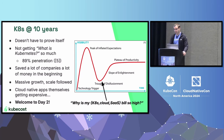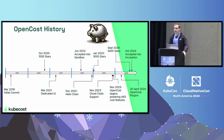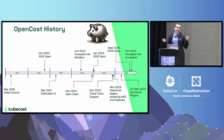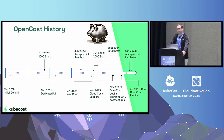So enter OpenCost. It's not necessarily a new project — our initial commit was in early 2019. I've broken this up into a timeline of social or milestone events on top, and more technical stuff on the bottom. We introduced a helm chart, cloud costs, and more recently OpenCost has now powered some of the cost functionality of AKS plugins, which we'll talk about.